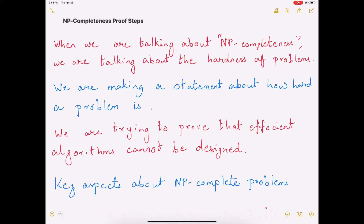Hi everyone. In this video we'll talk about the steps that we need to take to prove NP-completeness. When we are talking about NP-completeness, what we are talking about is the hardness of problems. We are trying to make a statement about how hard a problem actually is — to prove that the problem is hard, which means that there are no efficient algorithms that can be designed to solve this problem.